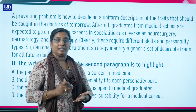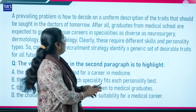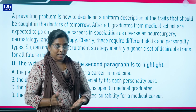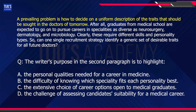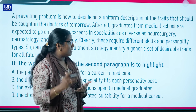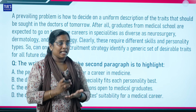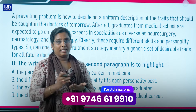This is a summary — a short version of the text. In this text, the first sentence presents a prevailing problem, meaning a dominant or widespread issue: how to decide on a uniform description of the traits that should be sought in the doctors of tomorrow — a standard form of desirable traits. This is a dominant problem and issue.